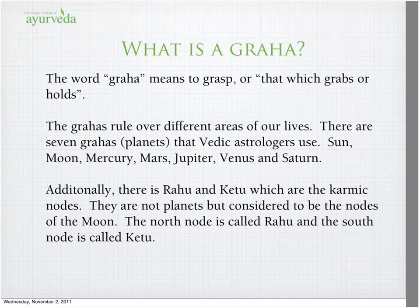Graha — the word means to grab or grasp. The planets rule over different areas of our lives. There are seven planets that Vedic astrologers use: the Sun, Moon, Mercury, Mars, Jupiter, Venus, and Saturn.